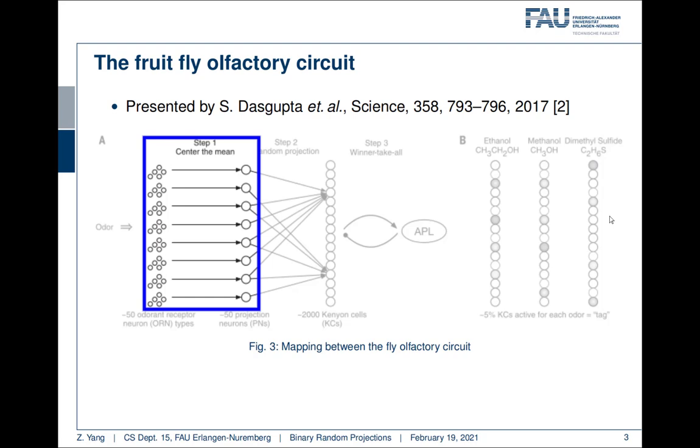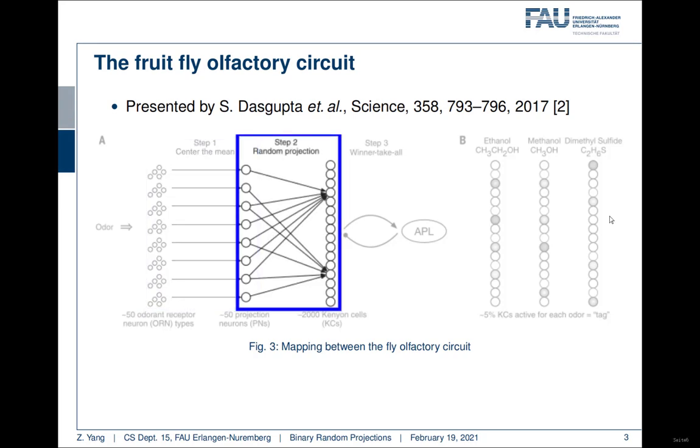The first step is the normalization step. It's a random projection step. The fruit fly takes some percentage of the projection neurons randomly and projects them to one of the kenyon cells.